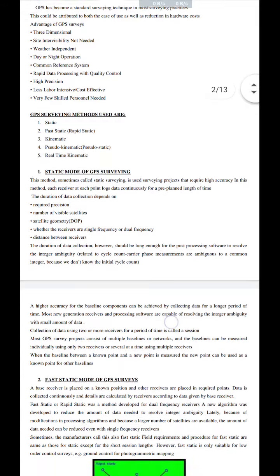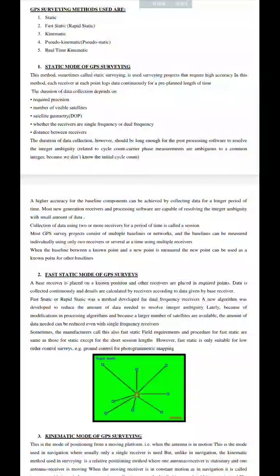The second method is fast static. In the fast static method, a reference base receiver is used. The base receiver collects accurate data while satellites are visible. The reference base receiver data is compared with other receivers for speed and accuracy.